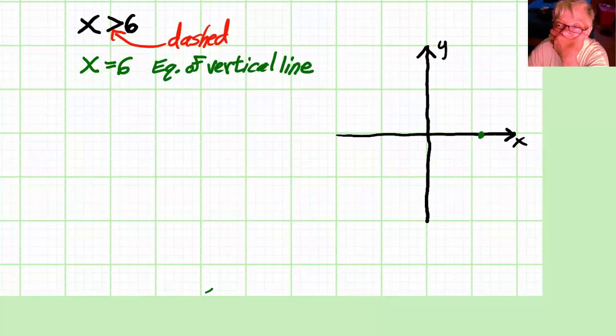You know how to graph this. We're going to go to x equals 6 on the x-axis and graph a vertical line up and down through it. Only this particular vertical line is going to have to be dashed.